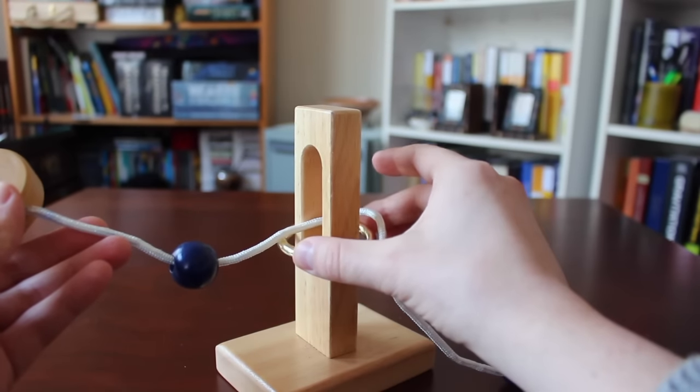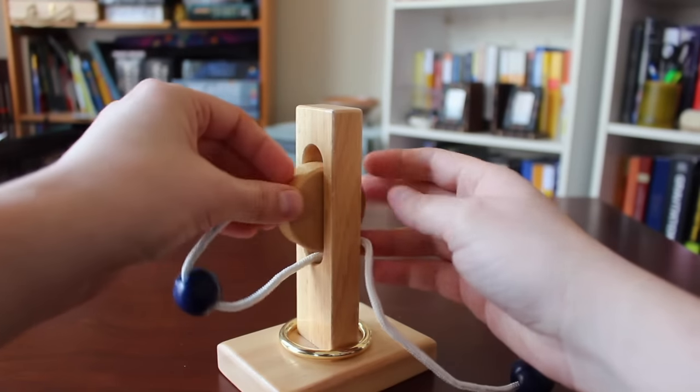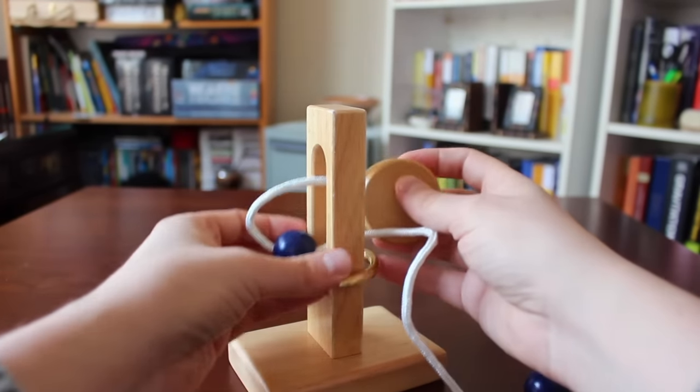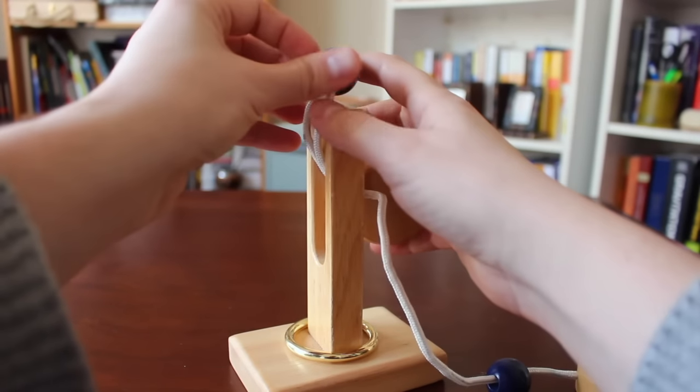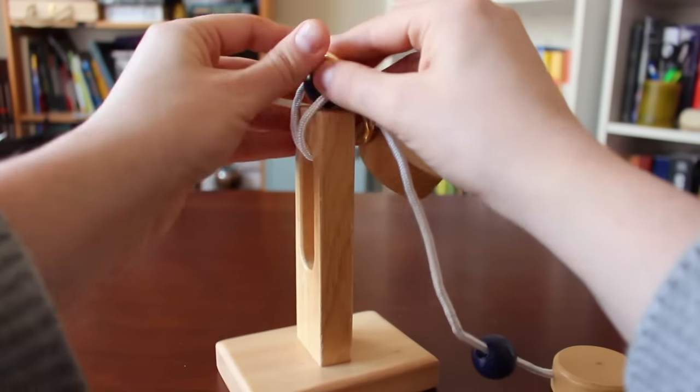So we know that we can't take this straight over the top, so we have to do something with this end piece. Let's put it to the center. Now we can move up over the top. If we put this blue bead on the top, we can bring the ring up and over.